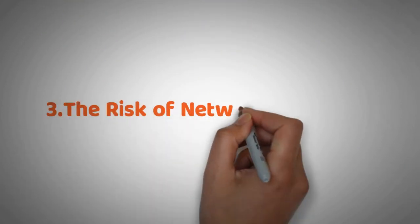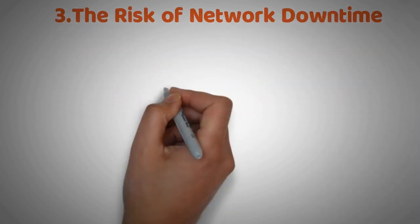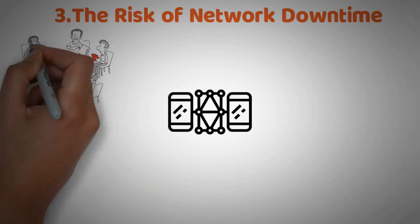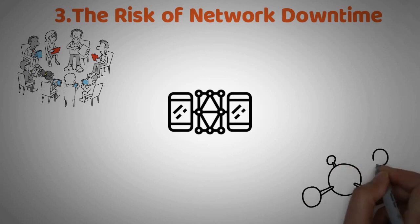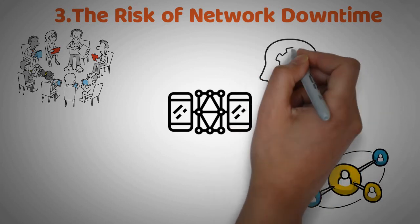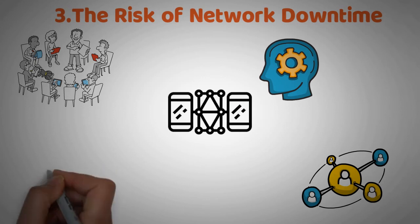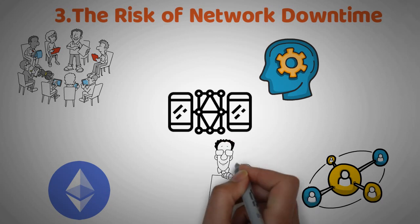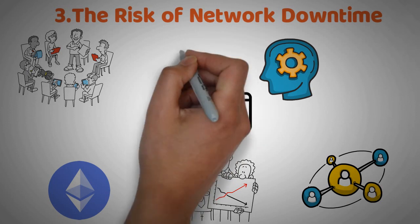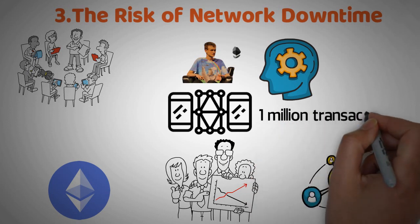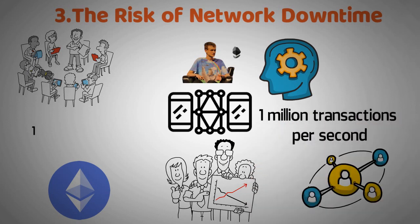The third and final risk is the risk of network downtime — when the entire network goes offline for a period of time. This could happen if there is an attack on the network or if there are too many shards and the management protocols can't handle it. Network downtime is a risk with all scaling solutions, but it's especially a concern with sharding because it's a new technology that hasn't been tested at large scale yet. To mitigate this risk, Ethereum is planning to roll out sharding gradually, starting with smaller networks and then increasing the number of shards as they get more experience. Furthermore, Buterin claims that these risks are unlikely, at least until Ethereum begins to break above 1 million transactions per second. Given that Ethereum currently runs 12 to 15 transactions per second, things are likely to run smoothly short term.